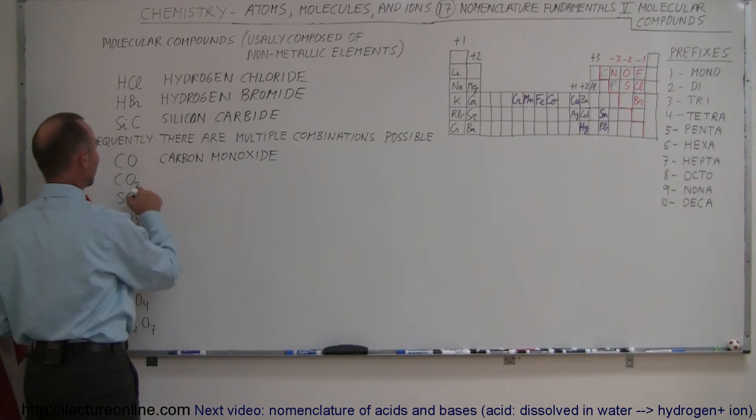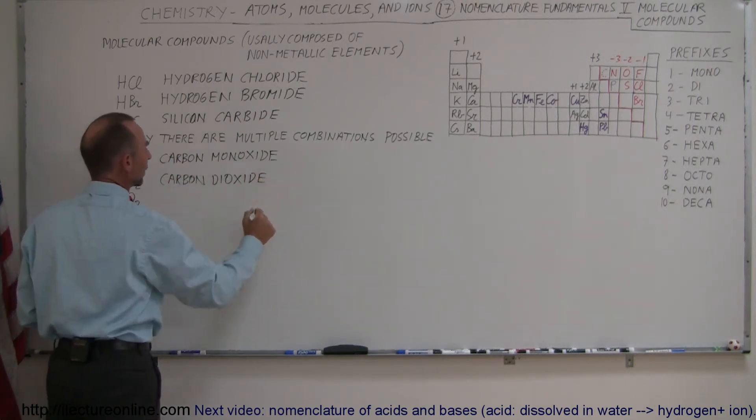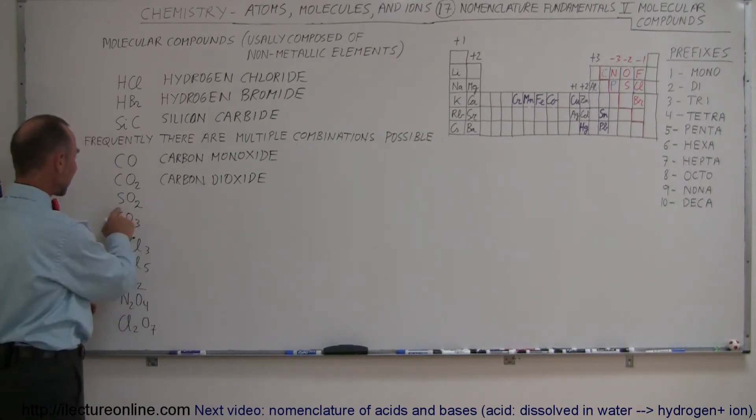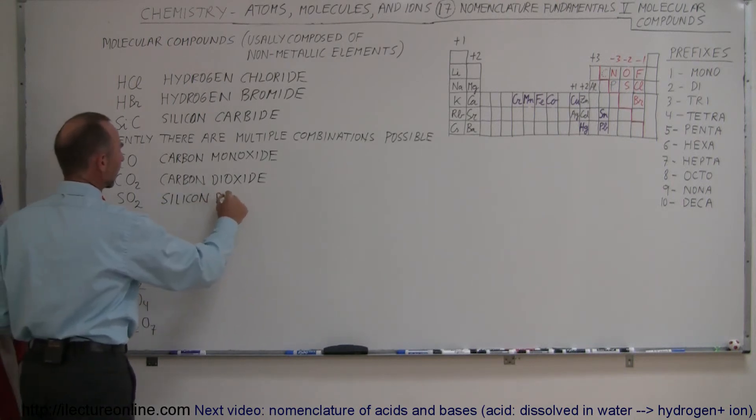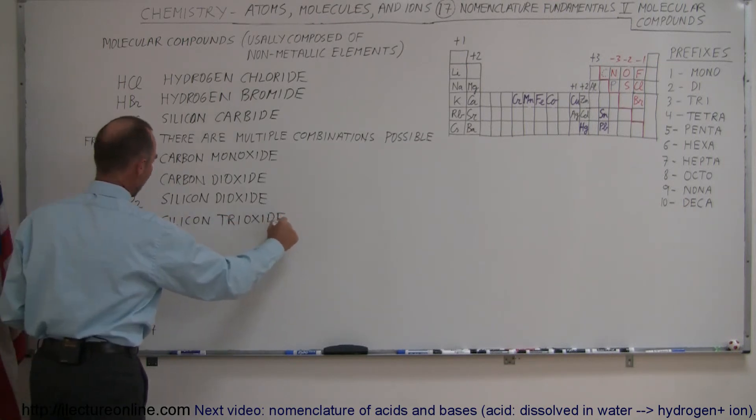Now carbon dioxide—well we have two oxygens, so instead of mono we're going to use di. This is called carbon dioxide. Of course most of us are familiar with that as one of the greenhouse gases. Here we have silicon with two oxygens and silicon with three oxygens, so this is called silicon dioxide, and with three oxygens we call it silicon trioxide.